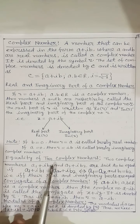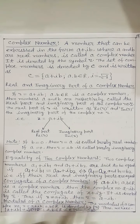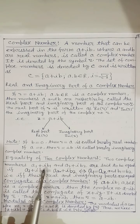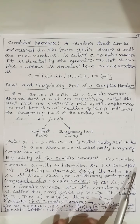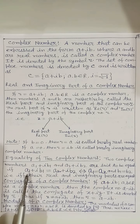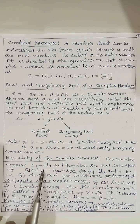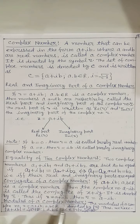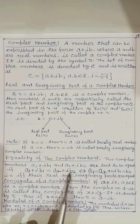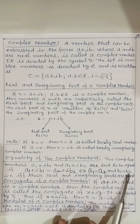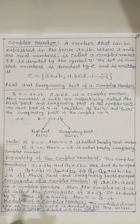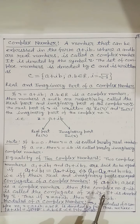Equality of two complex numbers: two complex numbers a₁ + ib₁ and a₂ + ib₂ are said to be equal if and only if a₁ = a₂ and b₁ = b₂ — that is, if their real and imaginary parts are respectively equal.